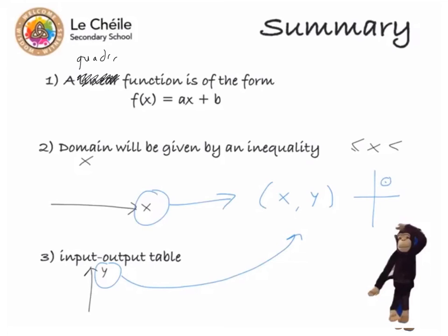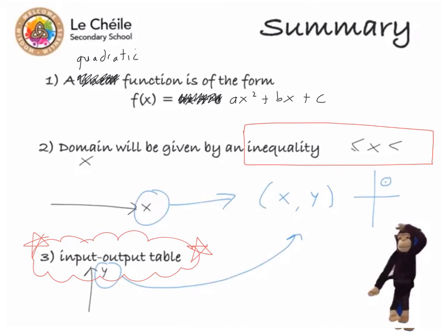So this will be a quadratic function, which will be in the form of an x squared, an x, and a constant. Then you'll be given an inequality to know where to draw your graph from. And finally, you need to create an input-output table, and that's the secret to unlocking your graph, because if you draw this and put in your inputs correctly, you'll get some nice couples of x's and y's that you can put onto your graph.